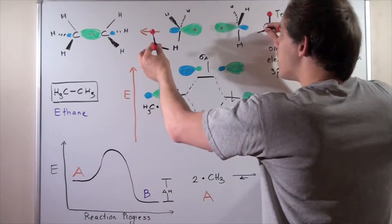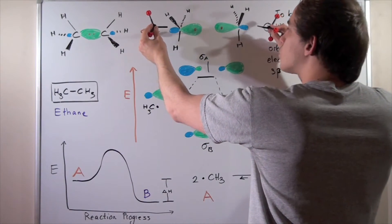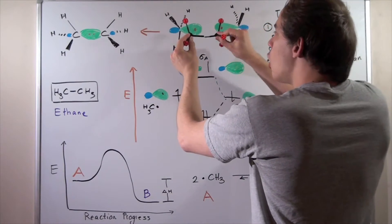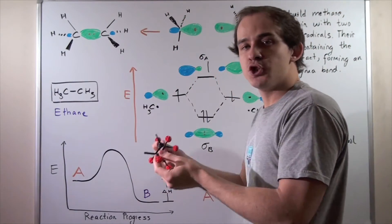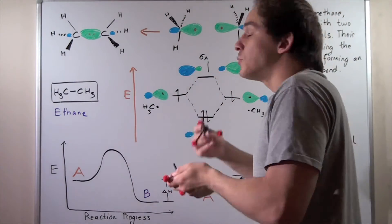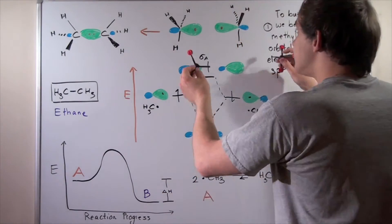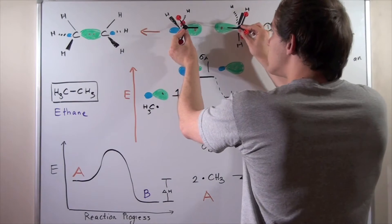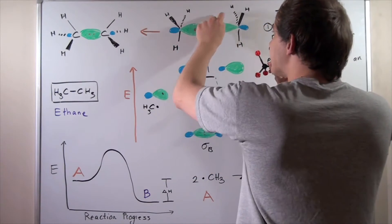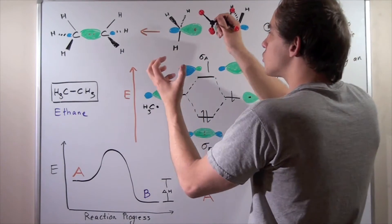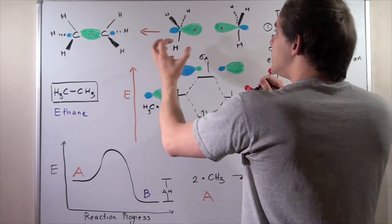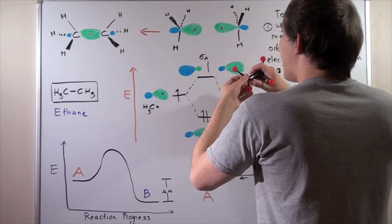Now, when these two methyl radicals begin to approach one another, the lobes, which are approximately 2p, become approximately sp3 hybridized. And that simply means that as they approach one another, these green sections become larger and larger, and these blue sections become smaller and smaller.